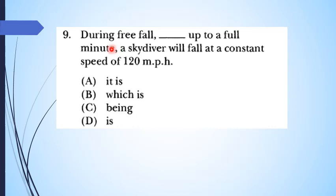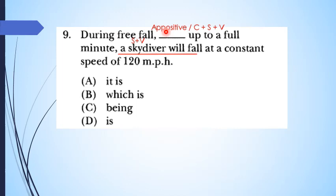Bagaimana dengan nomor sembilan? Nomor sembilan ini agak menarik. During free fall, kita punya dua koma. Antara dua koma, maka pilihannya sebenarnya bisa positif atau konektor. Di sini kita punya sky diver will fall, ini sudah jelas susunan subjek predikat. Jika ada dua koma, maka yang mungkin mengisi yang kosong di antara dua koma adalah pilihan A positif atau susunan konektor subjek predikat, atau konektor subjek plus verb. Kalau A positif, maka dia bisa berupa nomina saja menerangkan noun yang lain.